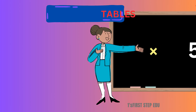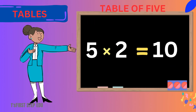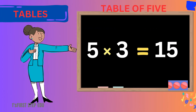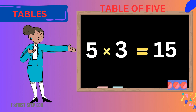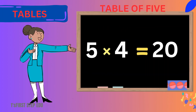4 eights are 32. 4 eights are 32. 4 nines are 36. 4 nines are 36. 4 tens are 40. 4 tens are 40. Table of 5.